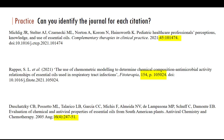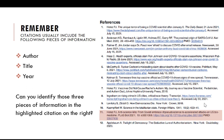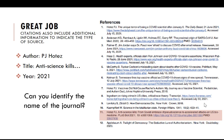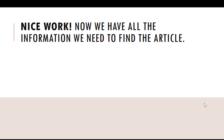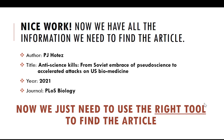If we want to find an article from a citation in a library's collection, we need to identify these essential pieces of information. Let's keep practicing with a list of references on the consequences of anti-science movements. Remember, the three key pieces of information are the author, title, and year. Can you identify each in the highlighted citation on the right? Now we know that the author is PJ Hotez, the title is Anti-Science Kills, and it was published in 2021. The name of the journal is PLOS Biology. Now that we know the key three and the journal title, we just need to use the right tool to find the article on the library's website.